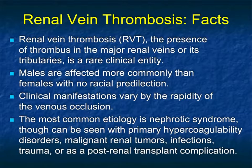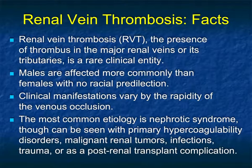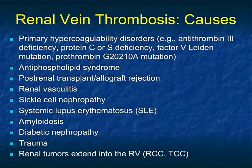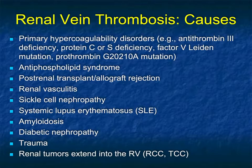Besides looking at arteries, look at the renal vein. Renal vein thrombosis is often related to tumors — thrombus in the renal vein and into the IVC in a patient with renal cell carcinoma. But there are other reasons, often inflammatory. Clinical manifestations vary by the rapidity of venous occlusion. The most common etiology is nephrotic syndrome, though it can be seen with primary hypercoagulability states, malignant tumors, infection, trauma, and post-renal transplant complications. Other causes include antiphospholipid syndrome, vasculitis, sickle cell disease, amyloid, and renal tumors.